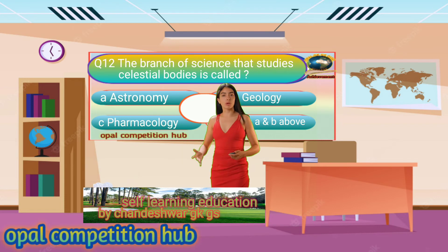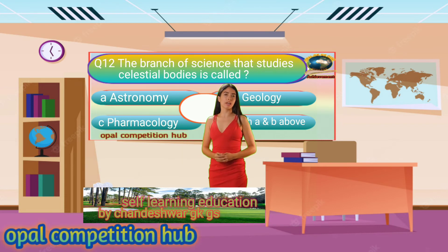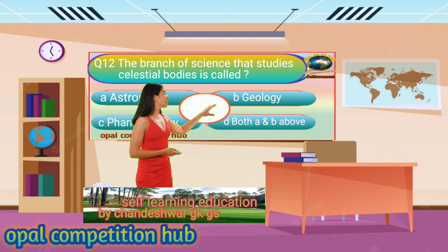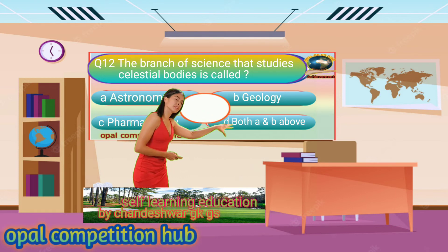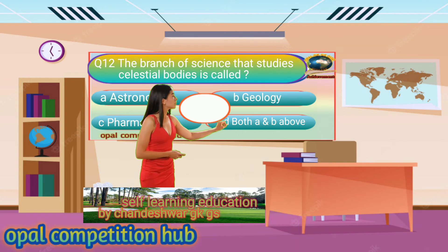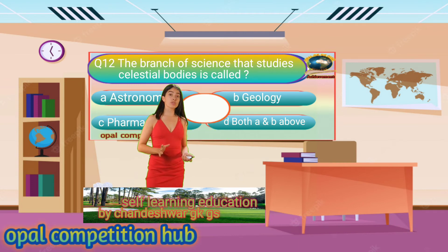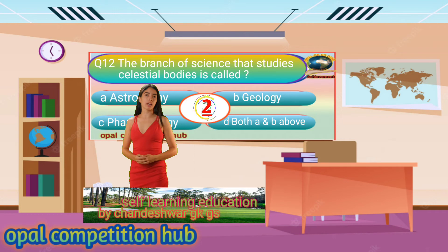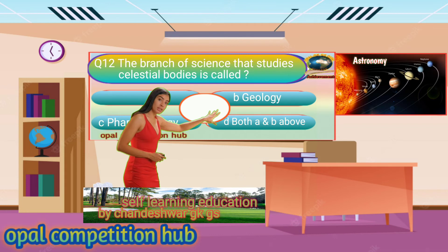Question number 12. The branch of science that studies celestial bodies is called. Your options are: Option A. Astronomy, Option B. Geology, Option C. Pharmacology, Option D. Both A and B. Your time starts now. Your answer will be Option A. Astronomy.